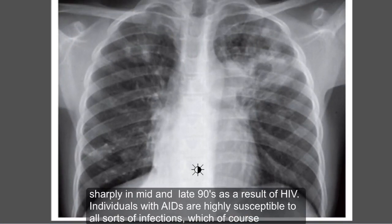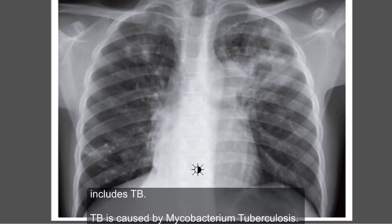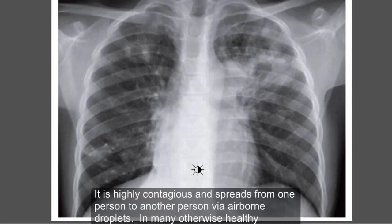A number of reported TB cases increased sharply in the mid and late 1990s as a result of HIV. Individuals with AIDS are highly susceptible to all sorts of infections, which of course include TB. TB is caused by Mycobacterium tuberculosis. It is highly contagious and spreads from one person to another via airborne droplets.